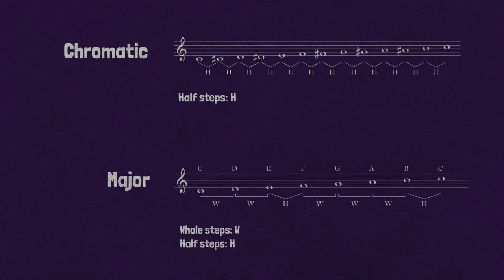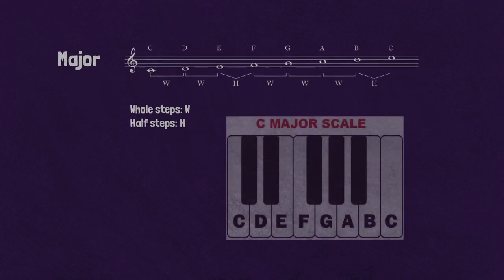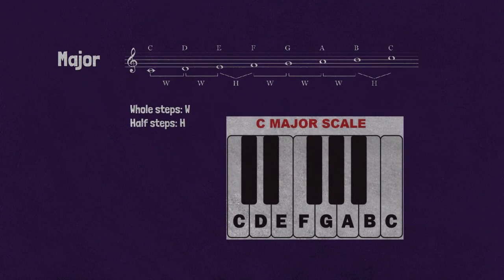The position of the half step thus helps us quickly locate the most stable pitches in a major scale. One way to remember the W, W, H, W, W, W, H pattern is to think of the white key notes on the piano — they match exactly the sequence of notes from C up to C.